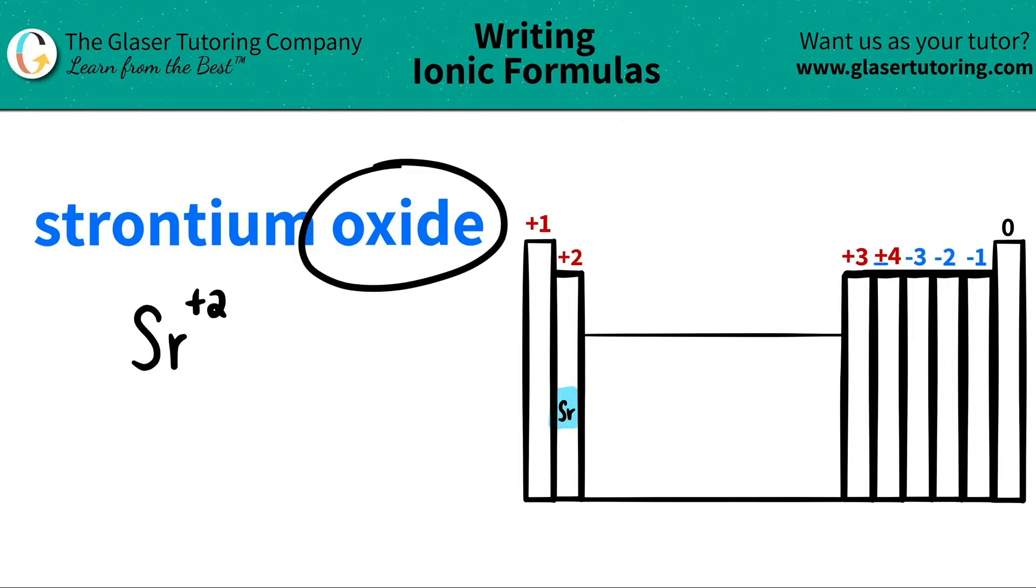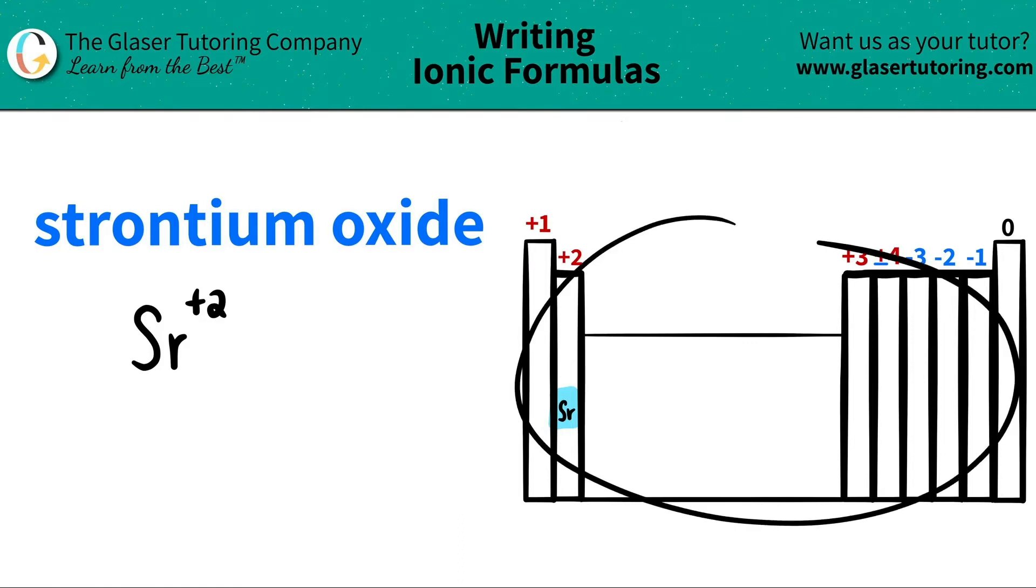Now comes the next part. I see that I have oxide. It has an IDE ending so that means that chances are it's going to be a non-metal. So I search my periodic table for something that starts with ox, and this is going to come from oxygen.